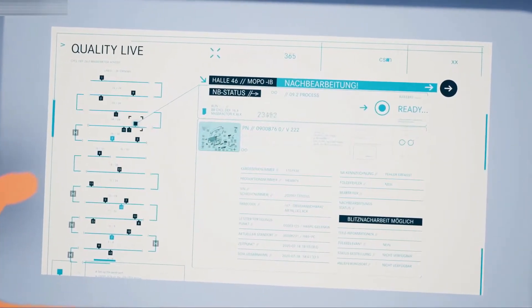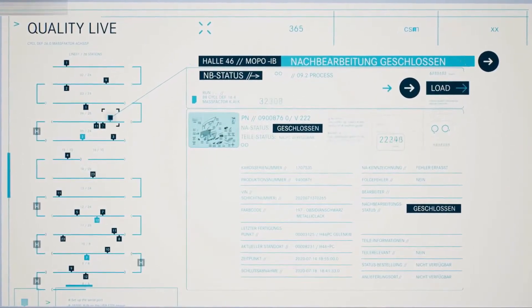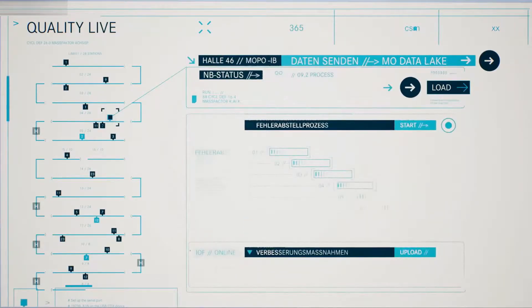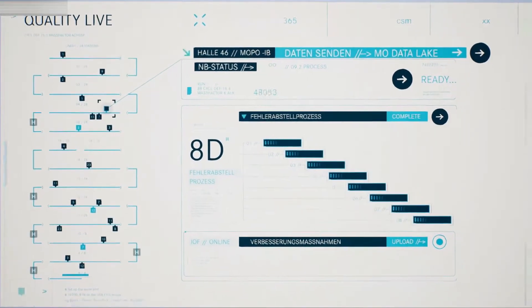MO360 detects deviations and informs only the responsible employees and quality managers. With the previously collected production data, the cause of a deviation is identified straight away and corrected instantly.